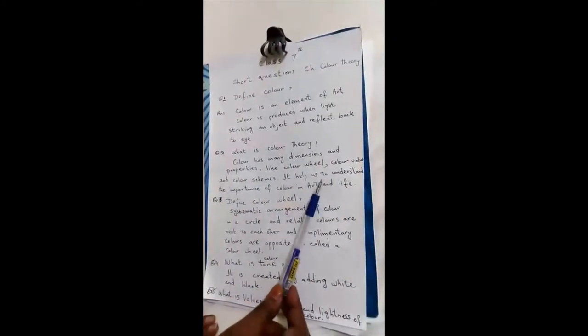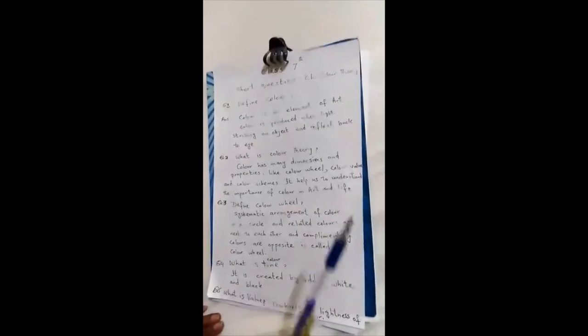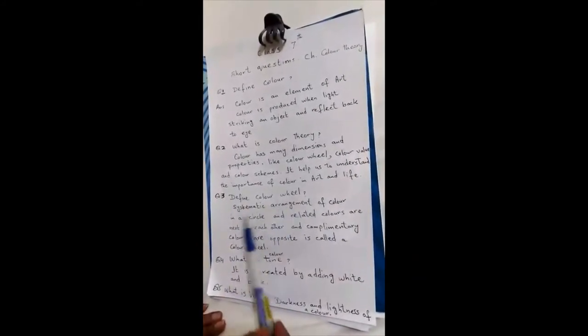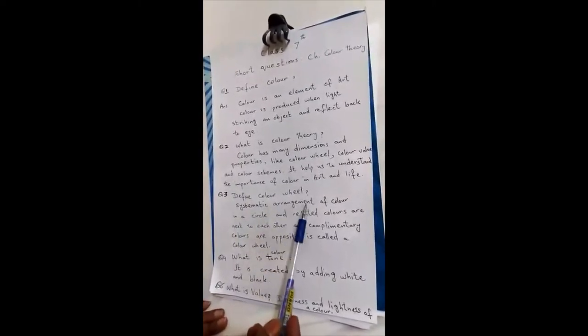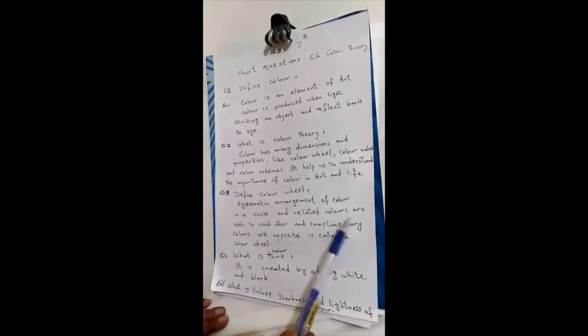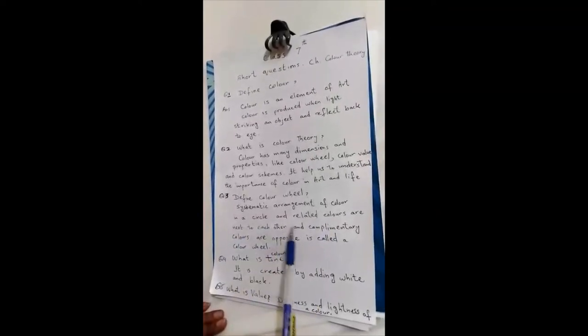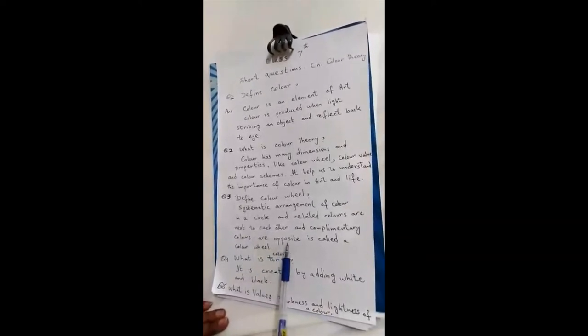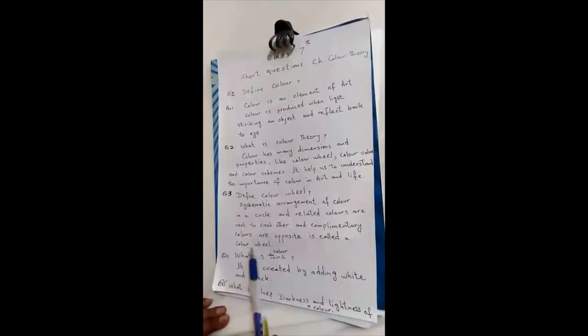Question number three: define color wheel. Systematic arrangement of colors in a circle where related colors are next to each other and complementary colors are opposite is called a color wheel.